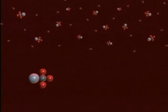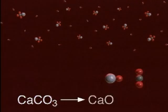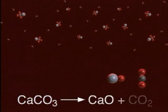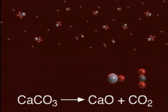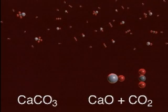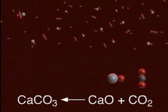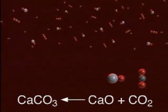When heated in a closed system, calcium carbonate will decompose to form calcium oxide and carbon dioxide. As the amounts of calcium oxide and carbon dioxide increase, a reverse reaction occurs and calcium carbonate is resynthesized.